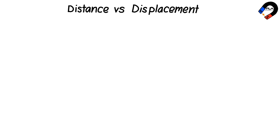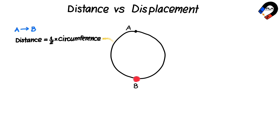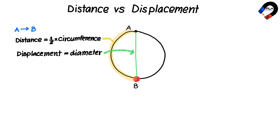Distance vs. Displacement. When a ball travels along a circular track from point A to point B, the distance traveled from A to B is half of the circumference of the circle. However, the displacement is the diameter of the circle, and it has direction from A to B.